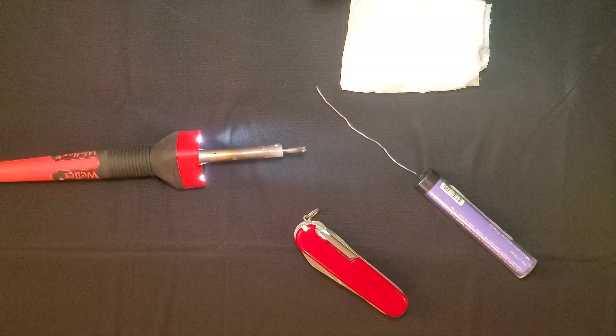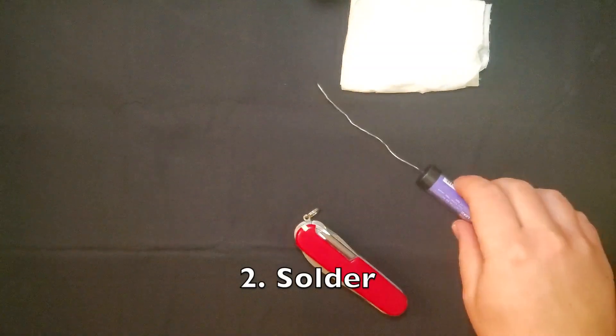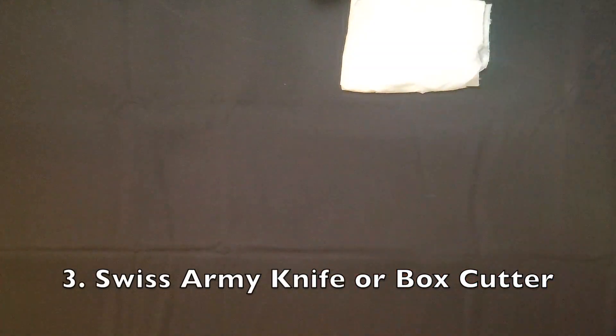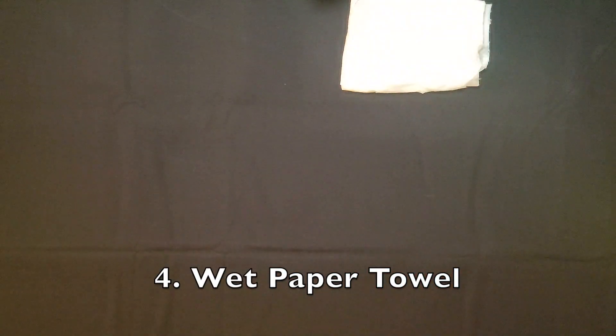I'm going to be using a soldering iron, solder, and a Swiss Army knife. At the top of the shot here you can also see a wet piece of paper towel. This is to wipe the solder from the soldering iron.